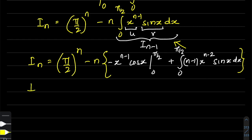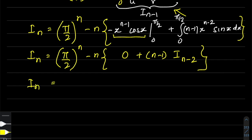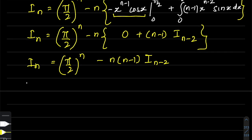When we evaluate the boundary term, putting in the upper limit π/2 gives zero because cos(π/2) = 0, and the lower limit also gives zero because x^(n-1) = 0 at x = 0. So that boundary term vanishes entirely. What remains is (n-1) times the integral from 0 to π/2 of x^(n-2) sin(x) dx, which equals (n-1)·I_(n-2).